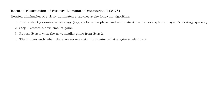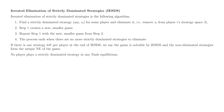Now that we have defined strictly dominated strategies, we can eliminate them to find Nash Equilibria. Iterated elimination of strictly dominated strategies, sometimes shortened to IESDS or iterated elimination, is the process of eliminating one or more strictly dominated strategies completely from a game, and repeating the process in the smaller game that remains, until no more strictly dominated strategies remain. If IESDS terminates at a unique strategy profile — i.e., one strategy remaining per player — then that strategy profile is the unique Nash Equilibrium of the original game. In this case, we say the game is solvable by IESDS.